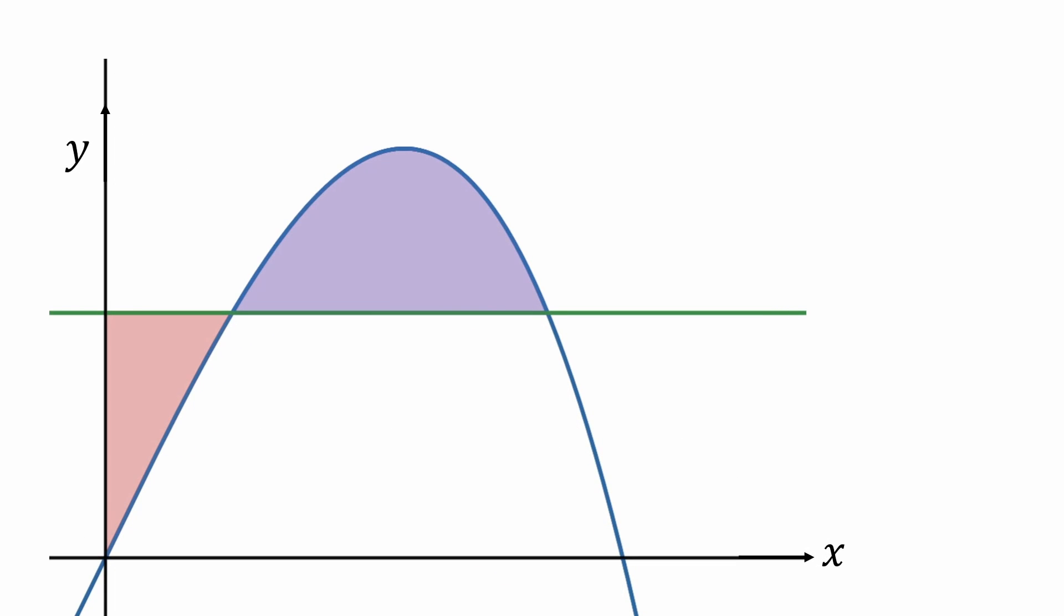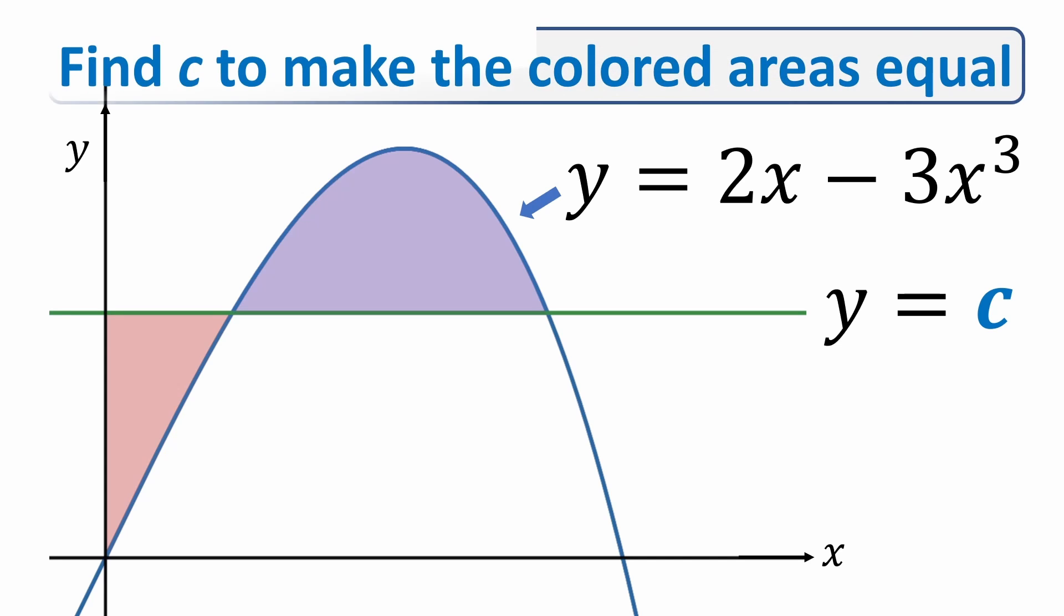Hey guys, here's a Putnam exam question for you. If the equation of the blue graph is given by y equals 2x minus 3x cubed and the green horizontal line cuts through it at y equals c, then what value of c will make the pink shaded area equal to the purple shaded area?